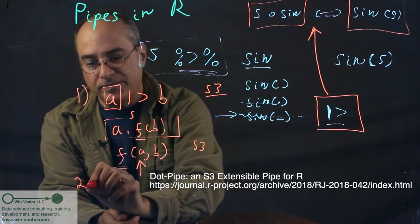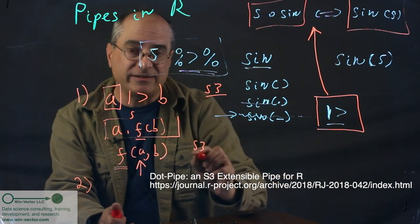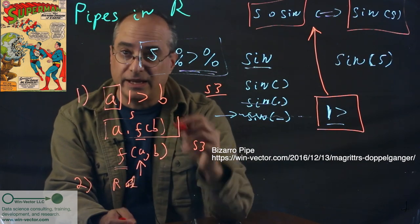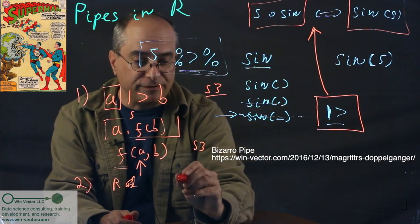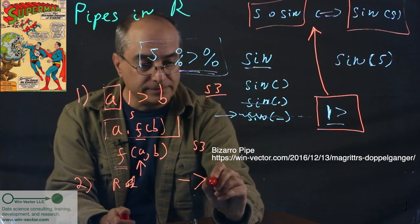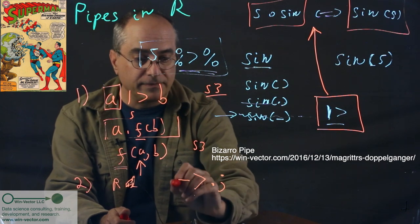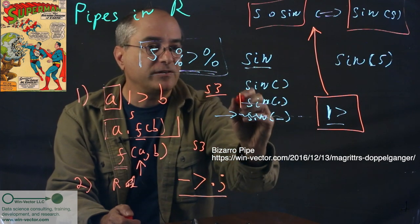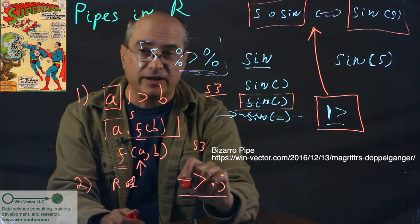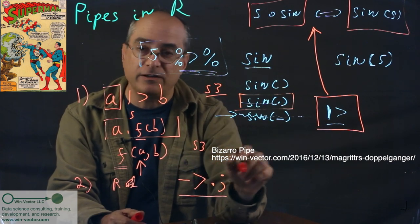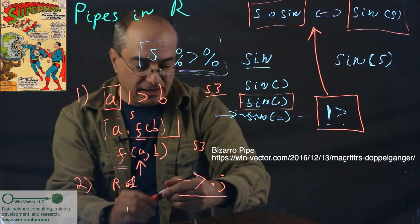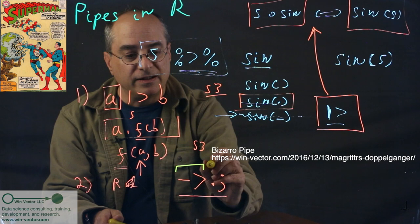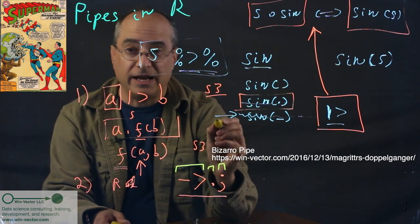The second point is, R already has a pipe in the base language, in addition to Magrittr. This glyph functions like a pipe, as long as you insist on this notation of a placeholder. And by glyph, I mean, read these four characters as if they were one symbol. Obviously, in actuality, they are a right assignment, the name of a variable, and a statement end.